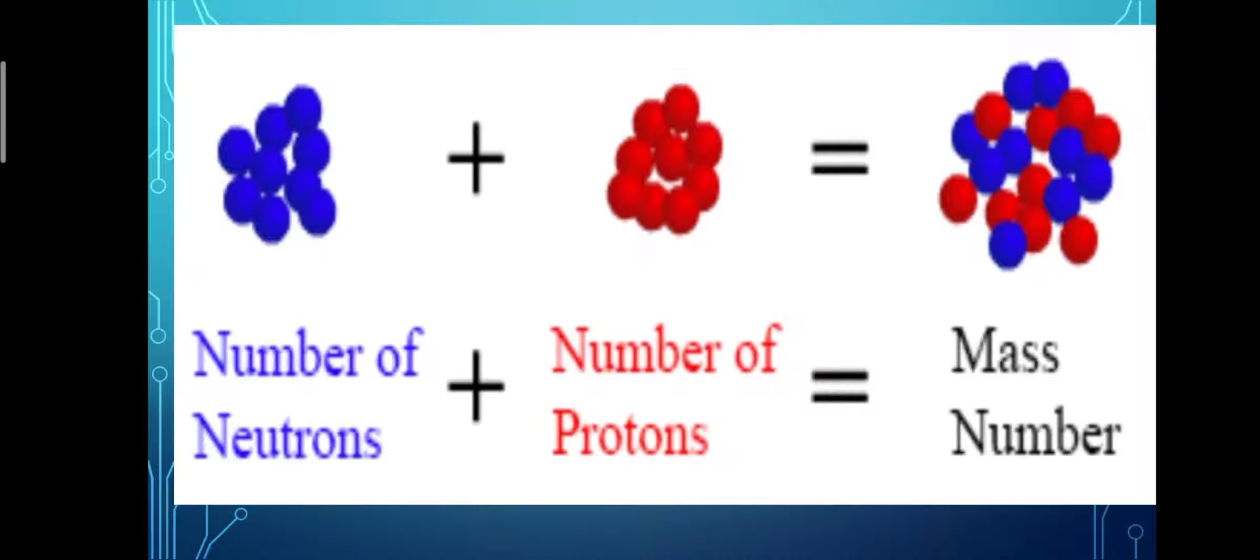The atomic mass or mass number is the number of neutrons plus the number of protons, equal to the mass number of an element.